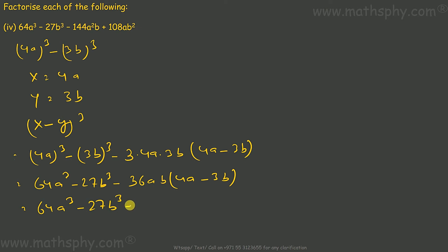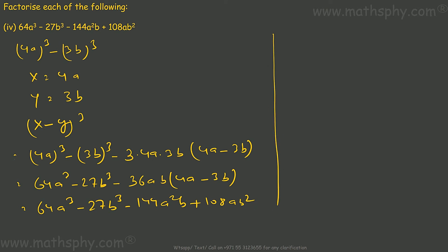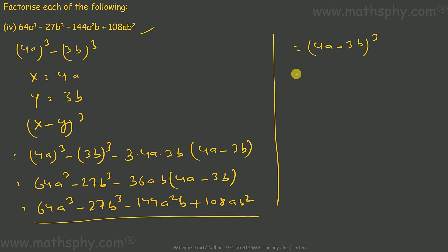The expansion gives 64a cube minus 27b cube minus 144a squared b plus 108ab squared. You see this and this are the same, so this can be written as 4a minus 3b whole cube.